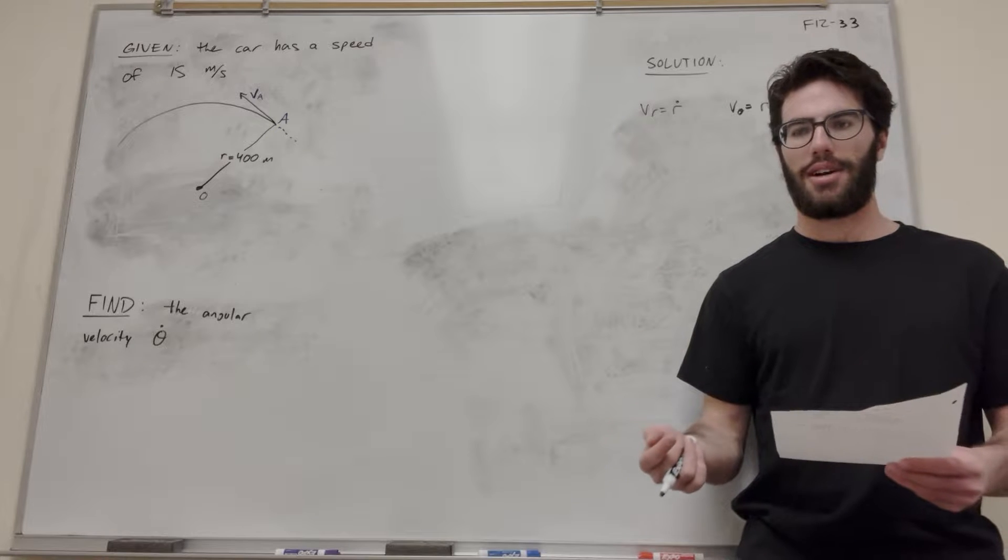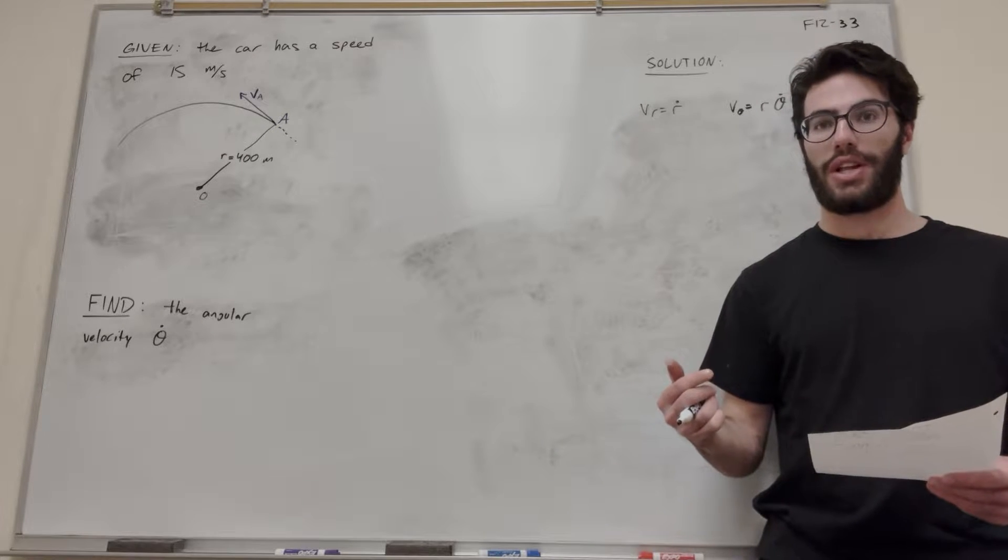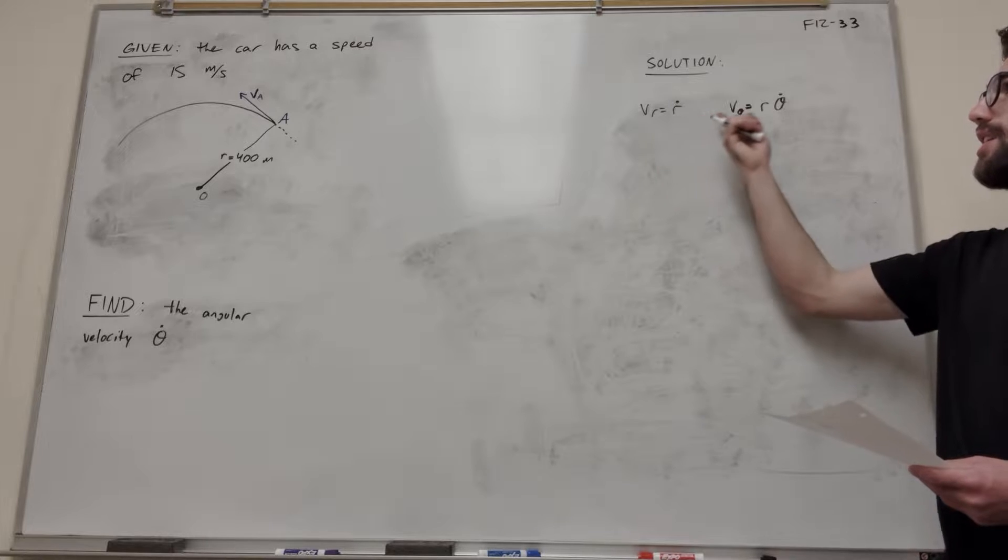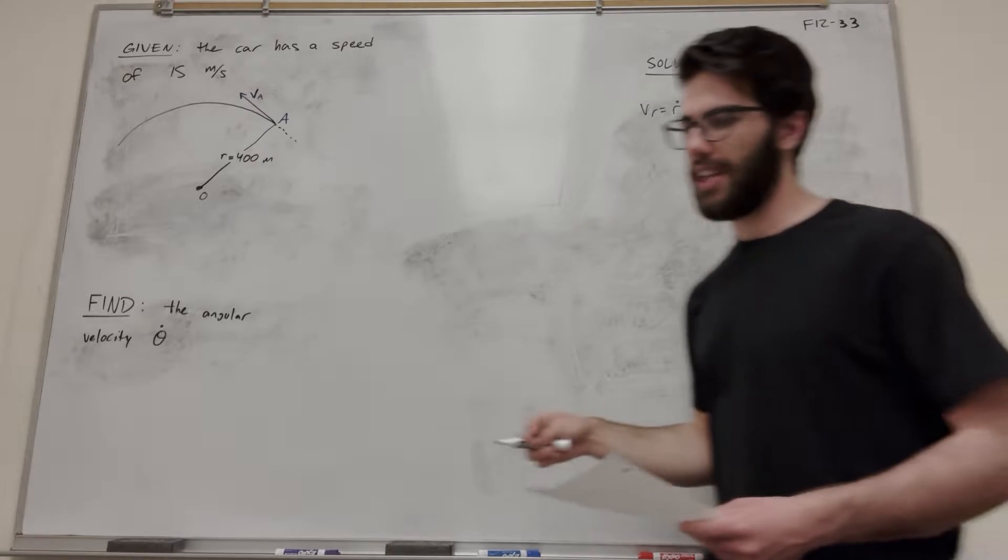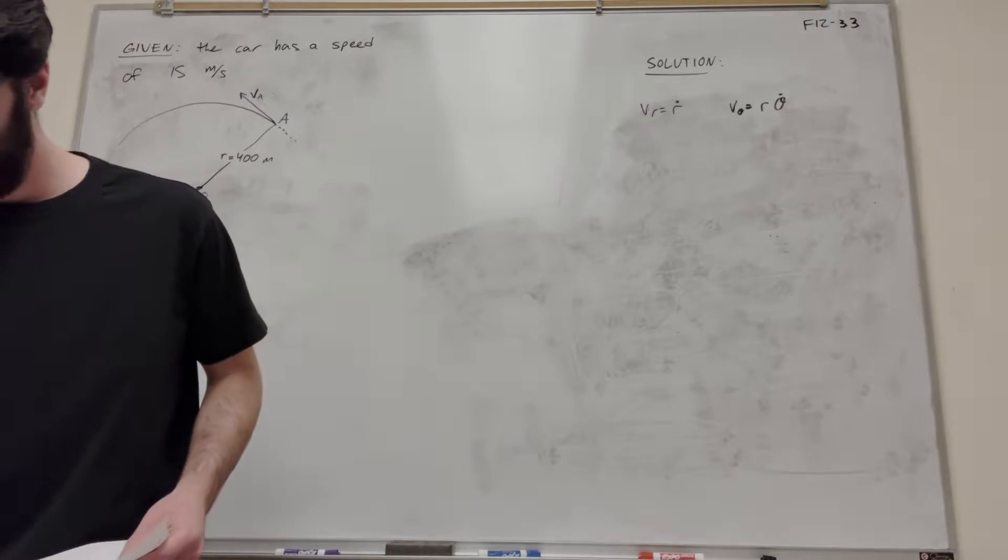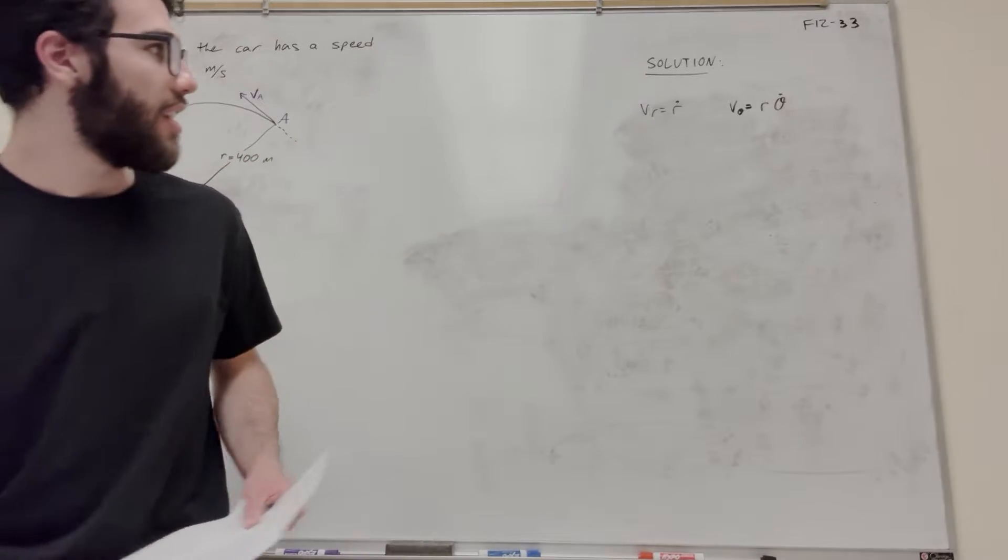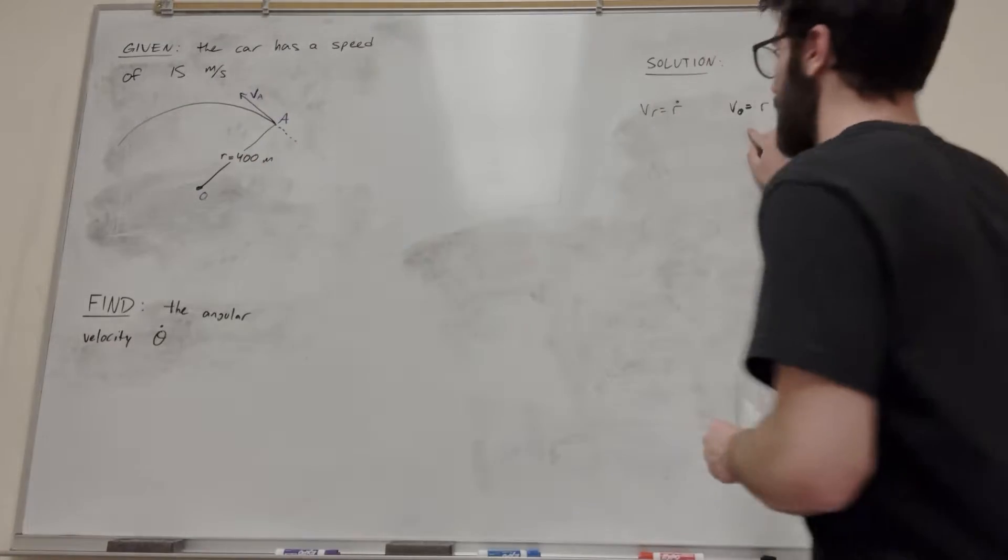We're going to be using transverse and radial components to solve this question. So here we've got velocity in terms of radial components and transverse components. Let me double check. Okay. Transverse and radial. Yeah, so this is transverse, this is radial.